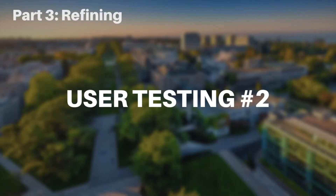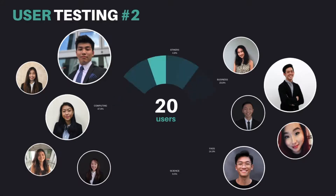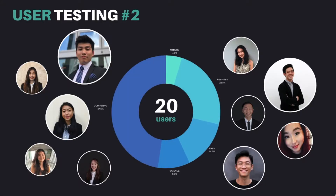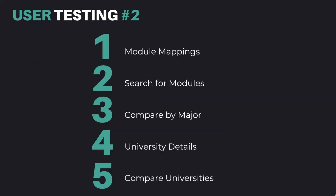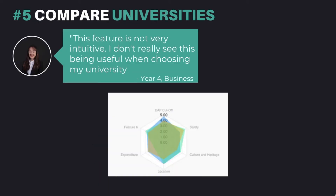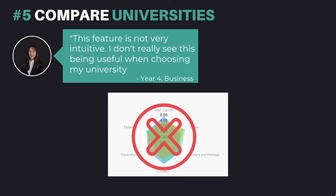Moving on to our refining stage. Using our deployed app, we brought it to our users for a third round of user testing. In this round, we asked users what they liked and disliked about each feature and asked them to rank our features according to their level of importance. Users' feedback indicated that the compare universities feature was too complex and did not value add to their decision-making process. Thus, in refining our features, we decided to drop the compare universities feature from our application.